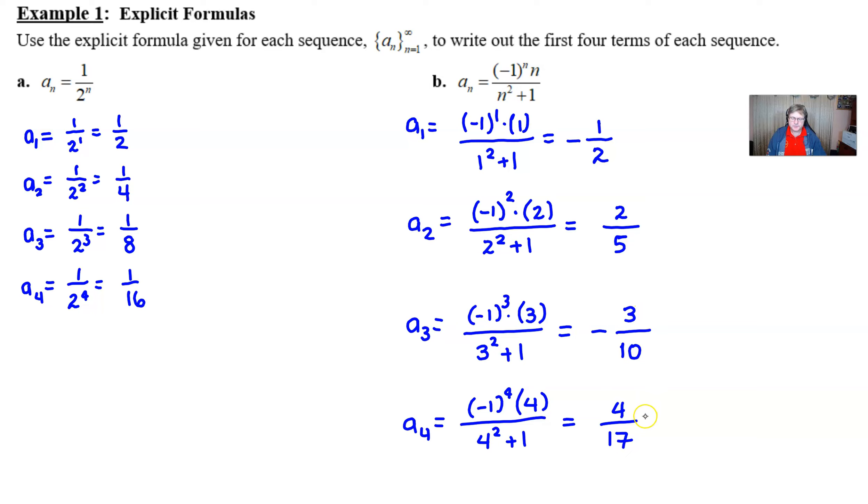Very interesting pattern. 1 half, 2 fifths, 3 tenths, 4 seventeenths. That might be pretty hard to predict, and yep, that's what the explicit formula would be. That would be a pretty tough one to come up with. Luckily, we didn't have to go that direction.